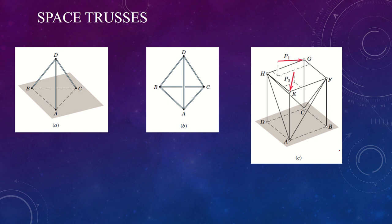The idealized space truss consists of rigid links connected at their ends by ball and socket joints. Whereas a triangle of pin-connected bars is the basic non-collapsible structure of a plane truss, a space truss would have six bars connected forming a tetrahedron as the basic non-collapsible unit.